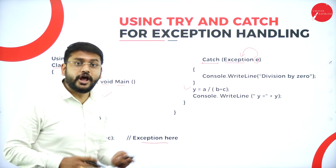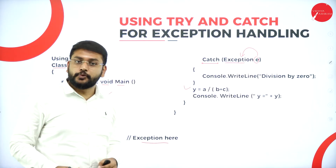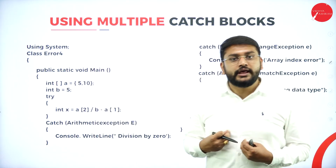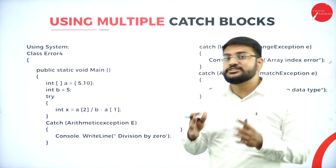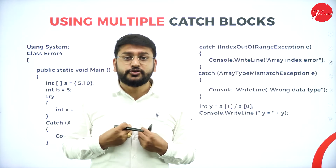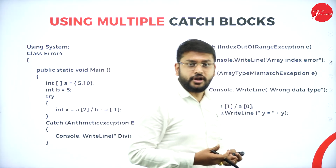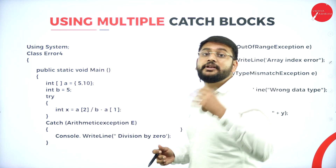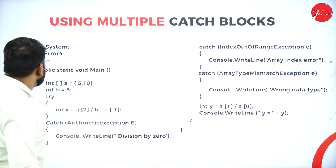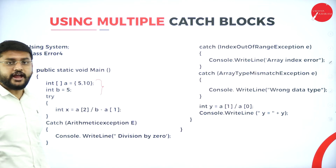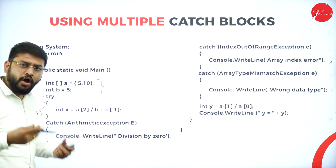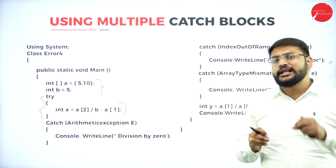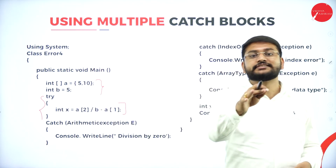Now let's understand how we can have multiple catch blocks. The question is: how do I know which particular exception I will be getting? In the previous session we discussed multiple exceptions — how do I know if I'll get an ArithmeticException or an ArrayIndexOutOfBoundsException? For that reason, you can have multiple catch blocks to handle multiple exceptions. I have one try block containing all my logic.